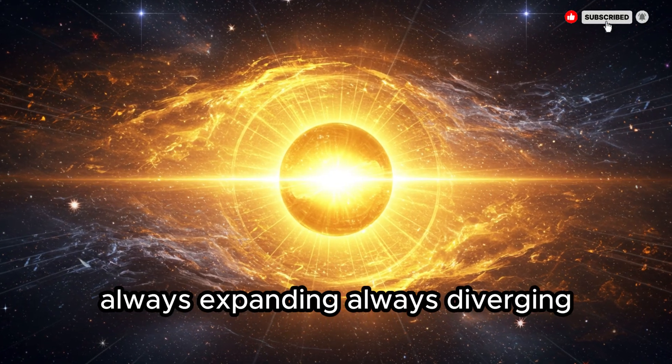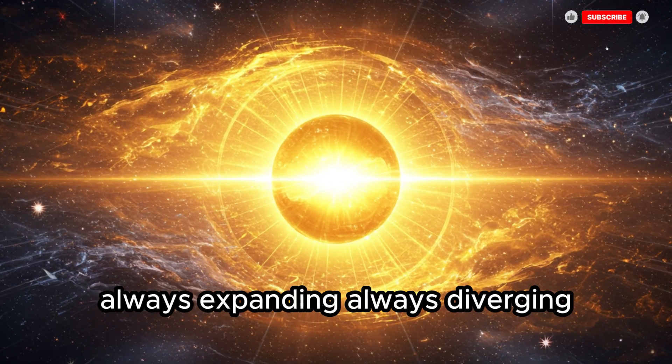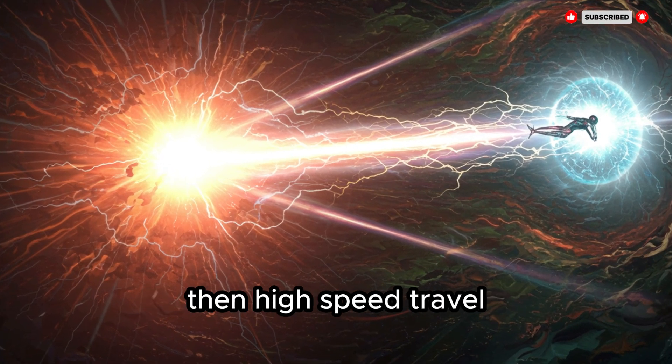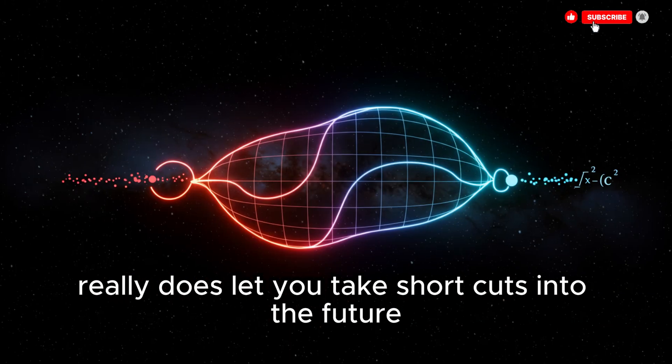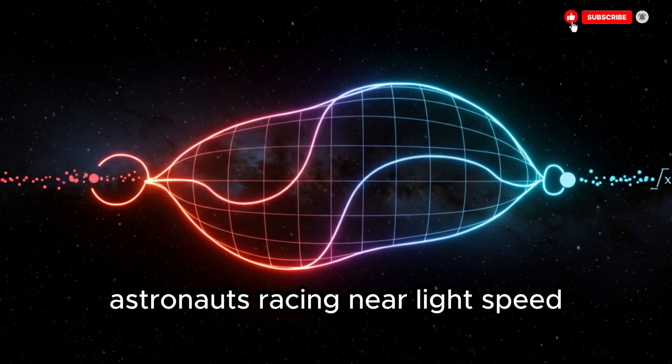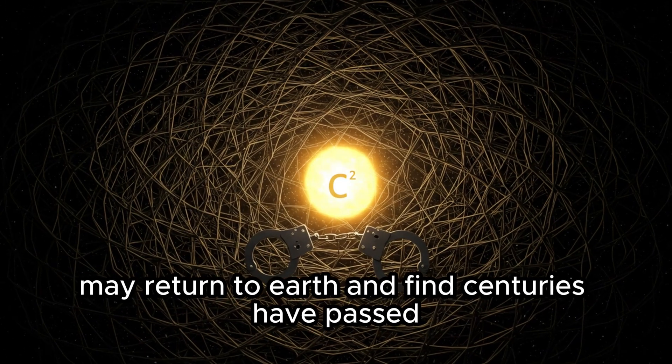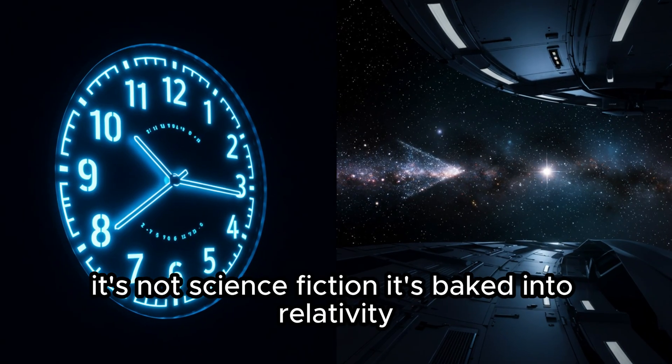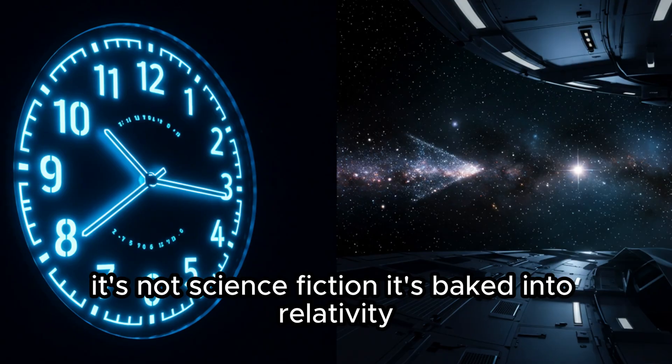The very curvature that enforces the speed limit also locks time into a forward flow. Hyperbolic geometry is merciless, always expanding, always diverging. But there's still wonder here. Because if this model is right, then high-speed travel really does let you take shortcuts into the future. Astronauts racing near light speed may return to Earth and find centuries have passed, even though they only felt a few years. It's not science fiction, it's baked into relativity.